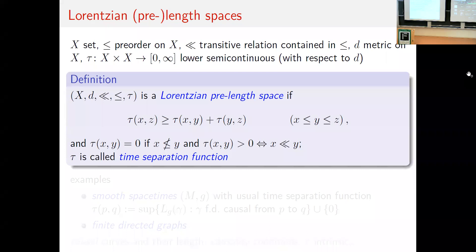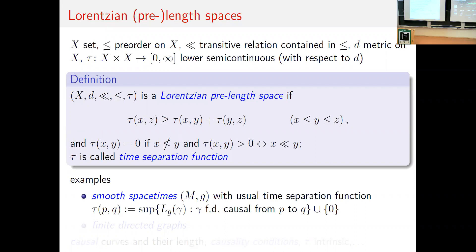τ(x,y) = 0 if they are not causally related, and positive if and only if they are time-like related. The ≪ relation is a compatibility condition: for smooth spacetimes x ≪ y means there is a future-directed time-like curve connecting them. This equality need not hold for continuous spacetimes, especially if push-up fails. τ is called the time separation function. The first example is a smooth spacetime, where τ is the supremum of g-lengths of future-directed causal curves from p to q, or zero if none exist. One can also view future-directed graphs as Lorentzian pre-length spaces.